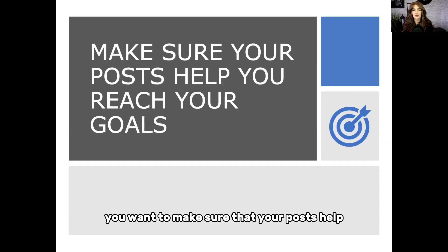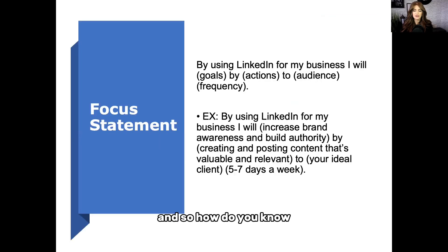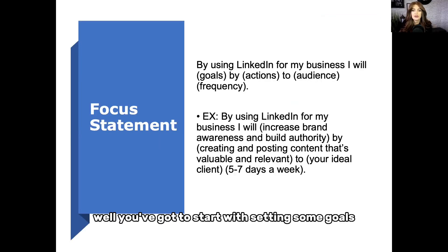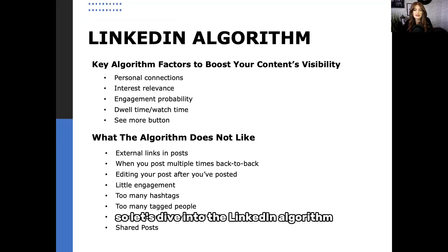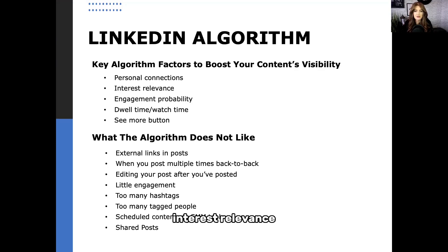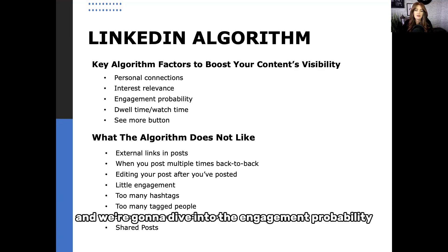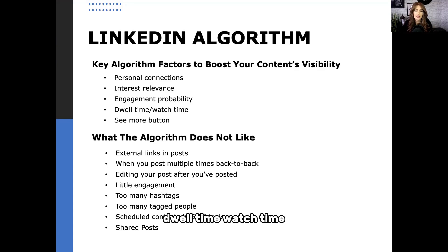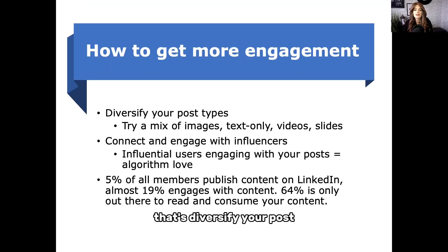You want to make sure your posts help reach your goals, and to know that, you've got to start by setting some goals. Let's dive into the LinkedIn algorithm. Key algorithm factors to boost your content's visibility are: personal connections, interest relevance, engagement probability — and we're going to dive into engagement probability — dwell time, and watch time. Diversify your posts: try a mix of images, text-only, videos, slides, and so on.